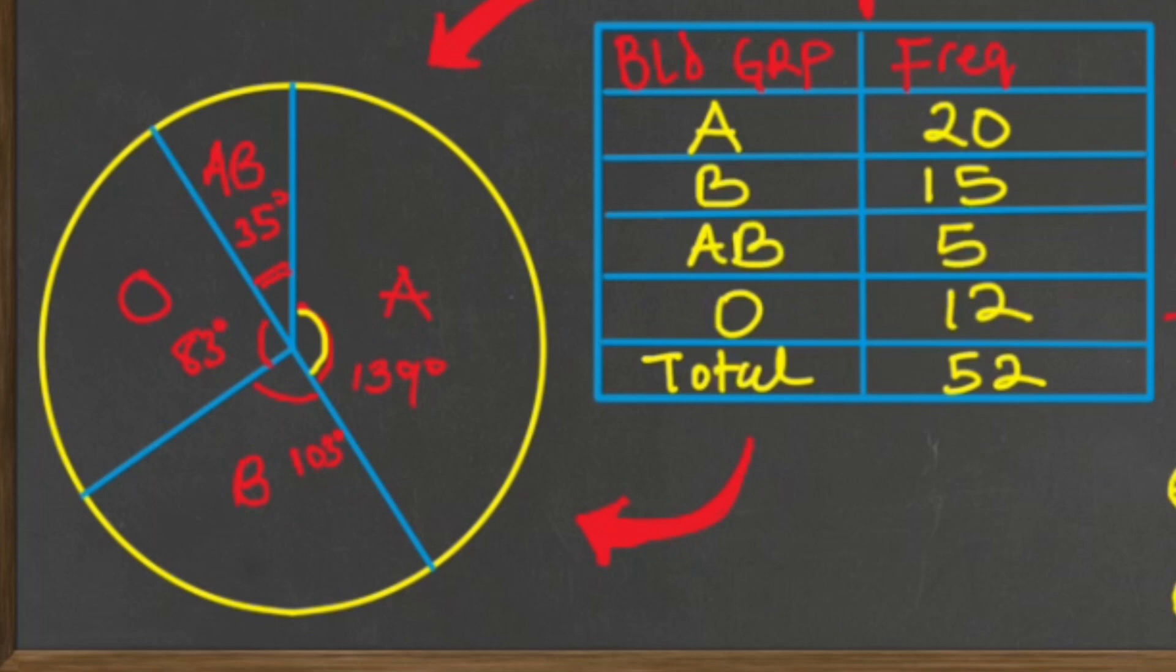Now tell me, which other type of graph can be used to represent this type of categorical data? Please kindly put your responses in the comment section of the video.